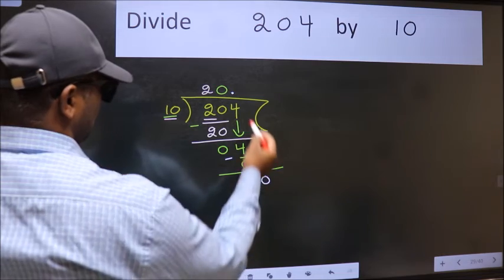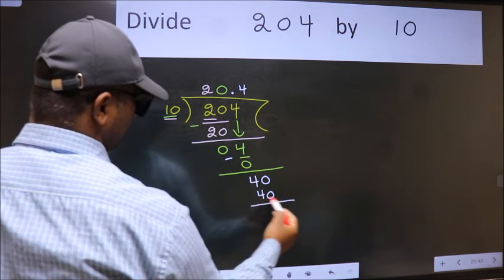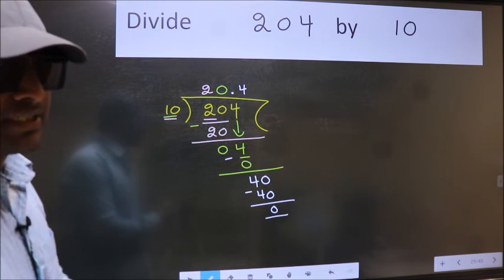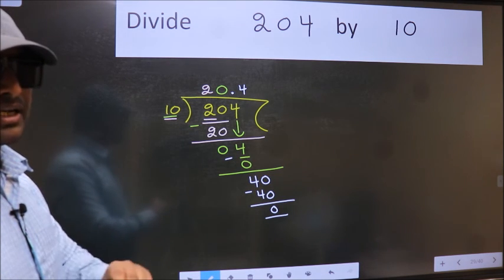When do we get 40 in 10 table? 10 fours, 40. Now we subtract. We get 0. Did you understand where the mistake happens? You should not do that mistake.